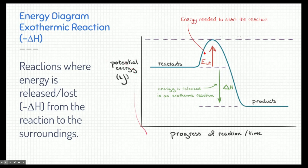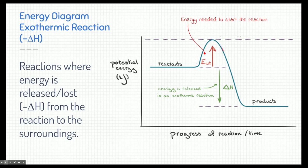In the energy diagram, we have potential energy over the progress of the reaction. At the beginning we have reactants with a certain amount of energy. Over time those reactants become products and can gain or lose energy. In an exothermic reaction, the energy is being released — we start with a higher amount of energy than we end up with. The products have lower energy, so this is a negative delta H, a loss of energy to the surroundings. The red arrow represents the activation energy needed to start the reaction — we typically ignore this small bump.